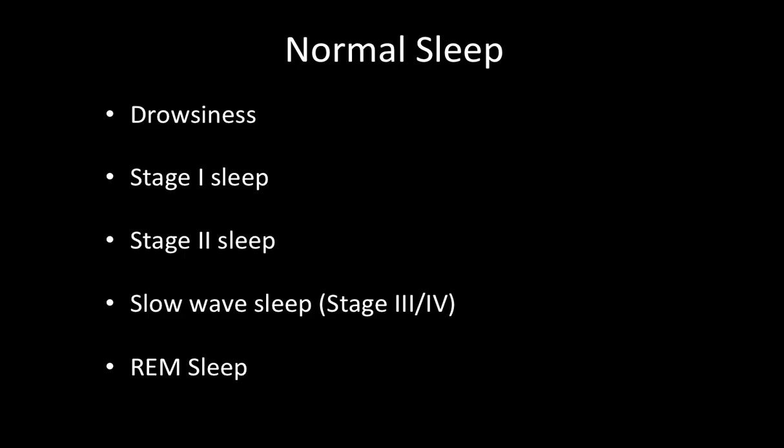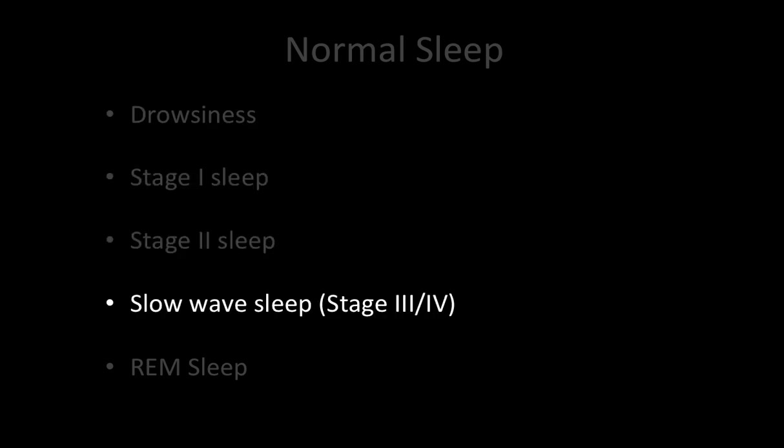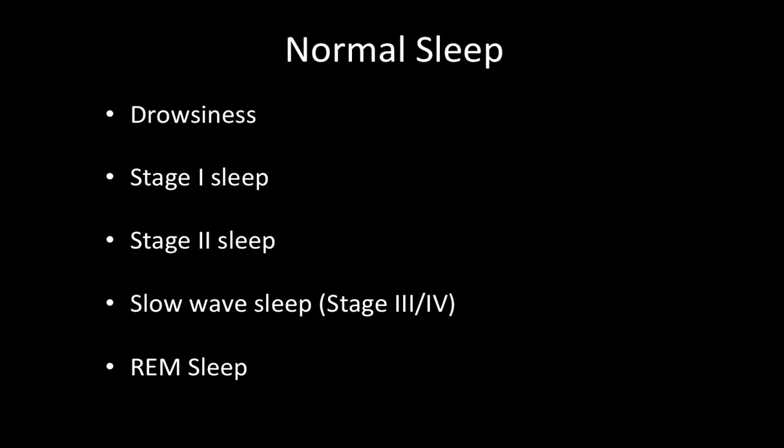To summarize, we have reviewed the five different stages of normal sleep: drowsiness, stage 1, stage 2, slow wave sleep, and REM sleep. Being aware of the normal components of sleep allows us to recognize abnormalities, which will be reviewed in subsequent videos.